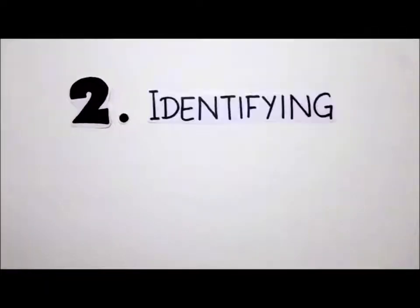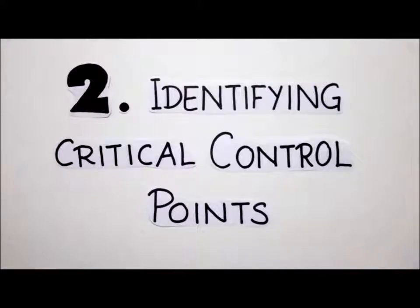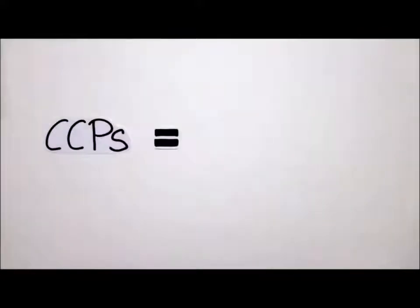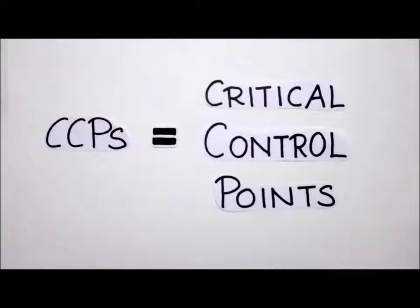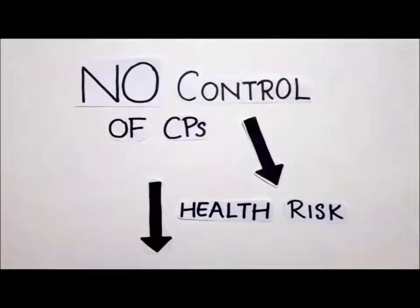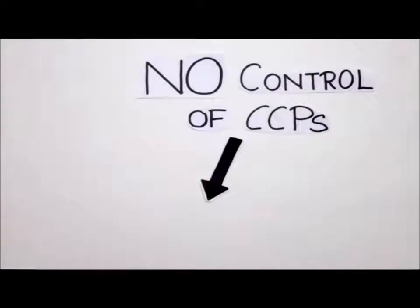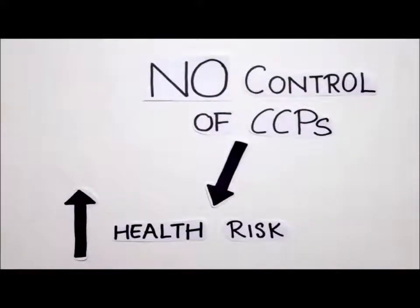The second HACCP principle is the identification of critical control points. This principle requires us to determine critical control points, which are any point or step at which control can be applied so that a food safety hazard can be prevented, eliminated or reduced to an acceptable level. We first identified control points in our report and then determined if they were critical control points. The loss of control of control points will cause low probability of health risk, whereas the loss of control of critical control points will cause a high probability of health risk.